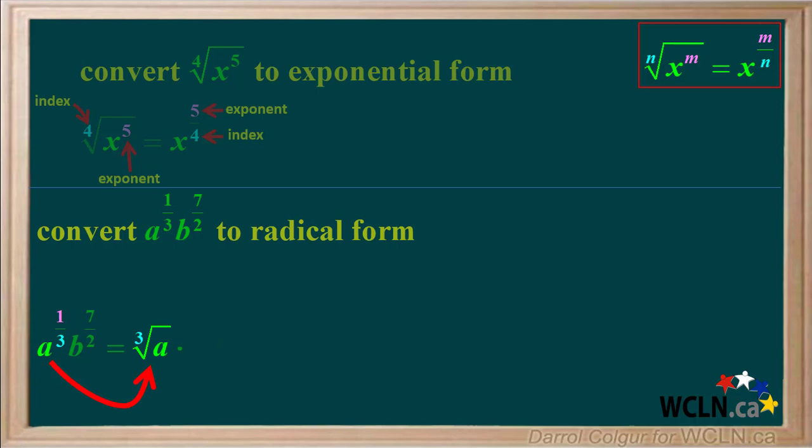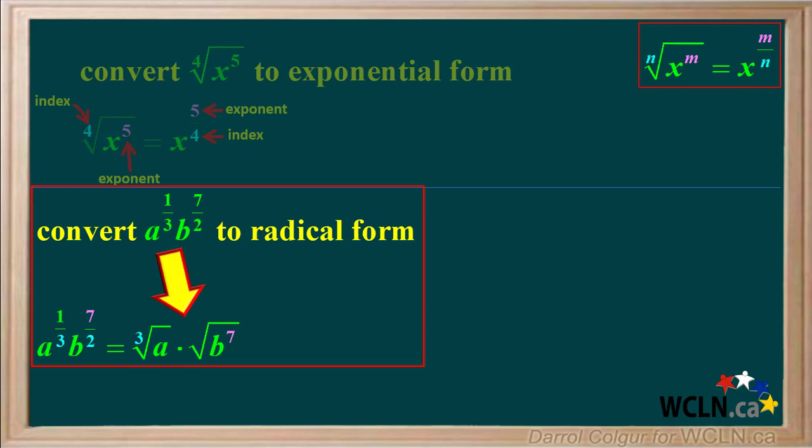a to the power of one third equals the cube root of a. And b to the power of seven halves equals the square root of b to the seventh. Here's the full solution to this example. If you like, pause the video and review the steps yourself.